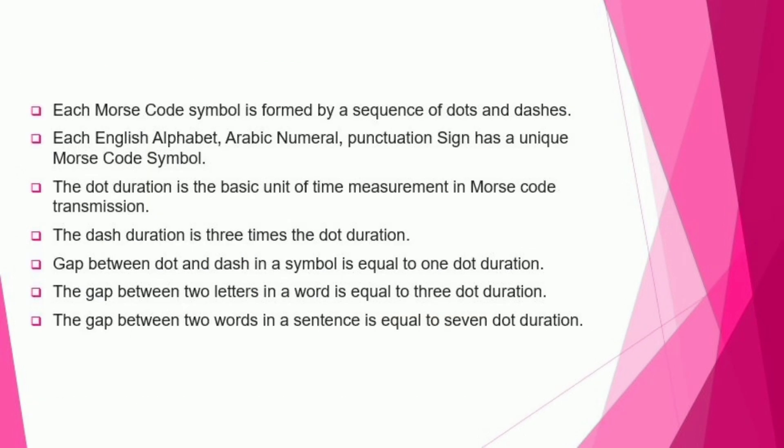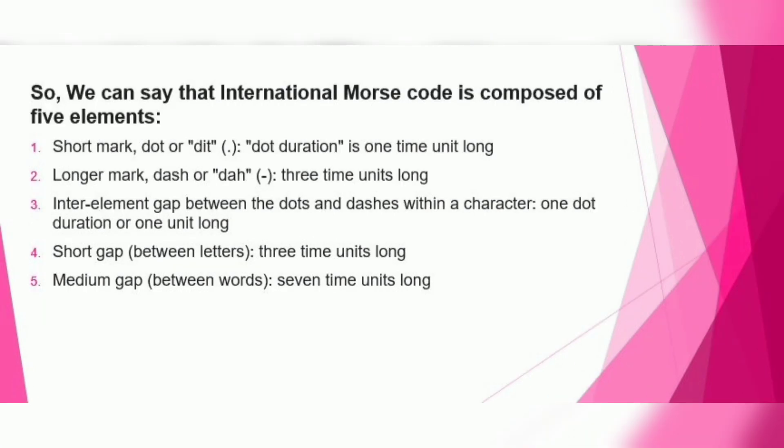Each English alphabet from A to Z, numbers from 0 to 9, and punctuation signs have unique Morse code symbols. The dot duration is the basic unit of time measurement in Morse code transmission. The dash duration is three times the dot duration. International Morse code is composed of five main elements: the dot — a short mark, one time unit long; the dash — a longer mark, three time units long; an inter-element gap between dots and dashes — one unit long; a short gap between letters — three units long; and a medium gap between words — seven units long.